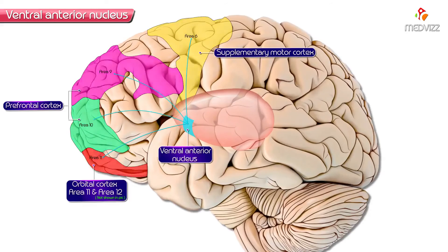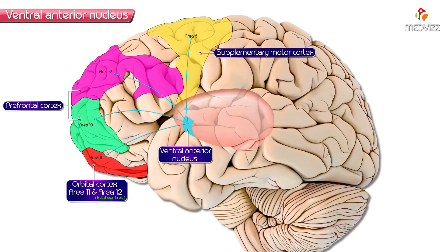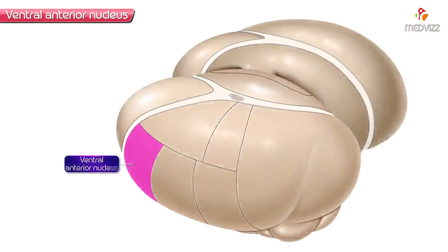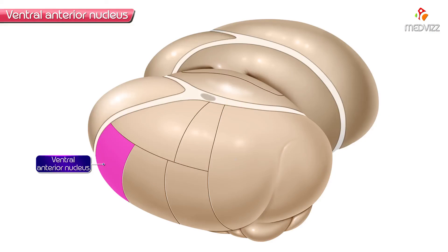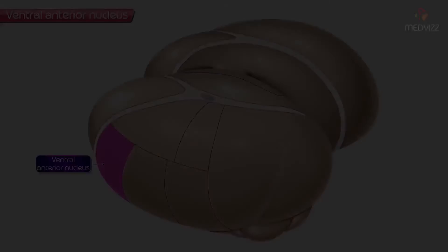The ventral anterior nucleus has reciprocal connections with the motor region of the frontal lobe, particularly the supplementary motor cortices. This summarizes what we need to know about the ventral anterior nucleus.